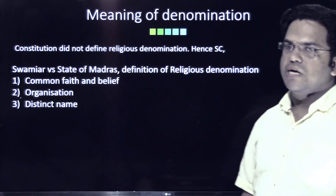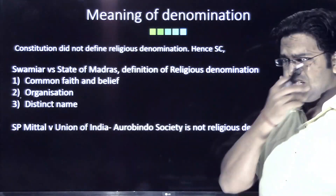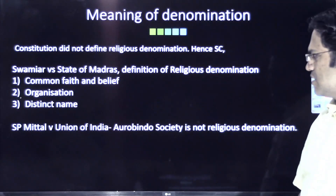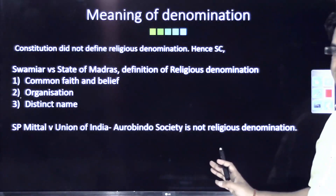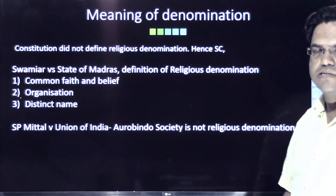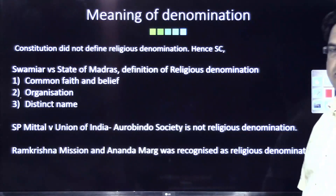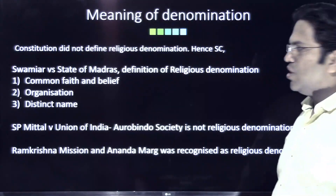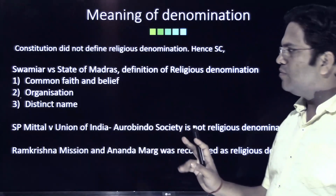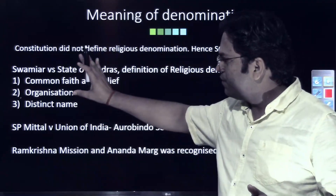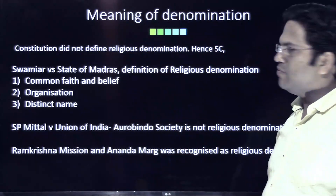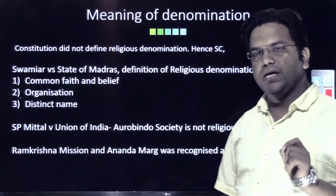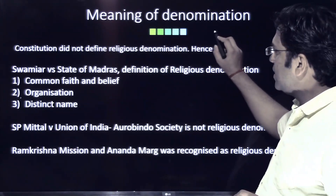The three criteria are: first, the group must have a common faith and belief; second, a distinct name; and third, an organization. Accordingly, in SP Mittal versus Union of India, the Aurobindo Society was denied religious denomination status. However, Ramakrishna Mission and Ananda Marga were recognized as religious denominations. Any group that fulfills these three Supreme Court criteria can enjoy the rights extended under Article 26.